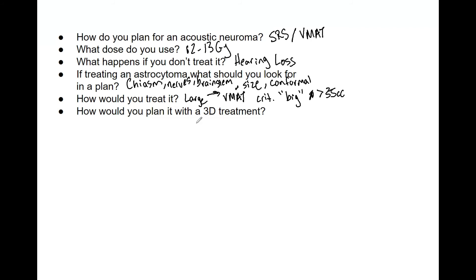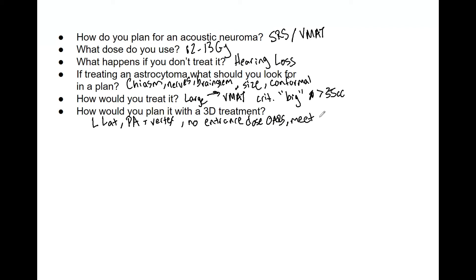For 3D planning of an astrocytoma, the first thing I would do is use a left lateral field, a PA field, and a vertex field going through the top of the head. Regardless of arrangement, you don't want any entrance dose to OARs — that's priority one. Sometimes you also prefer no exit dose, but at some point there has to be a trade-off, and if you have no entrance dose you'll likely end up with some exit dose. Of course you must meet all OAR tolerances.